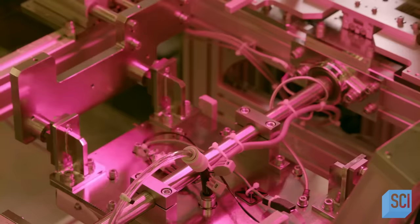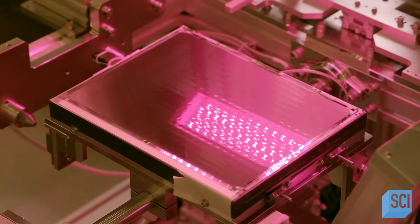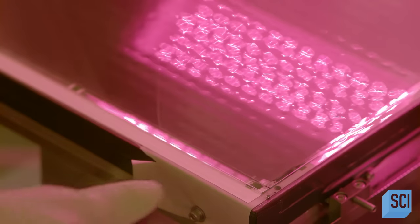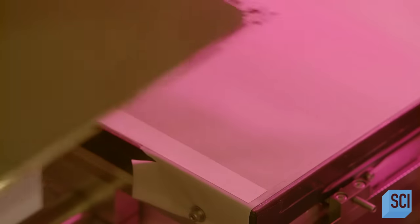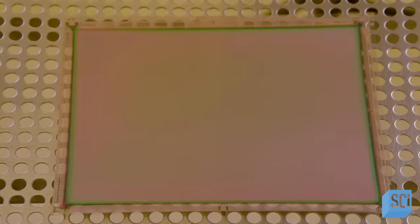Once the lamination process is complete, a technician removes the screen from the chuck. This is the backplane before and after the electronic ink lamination.